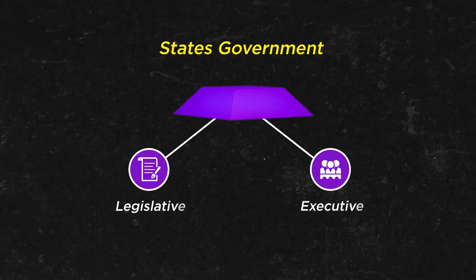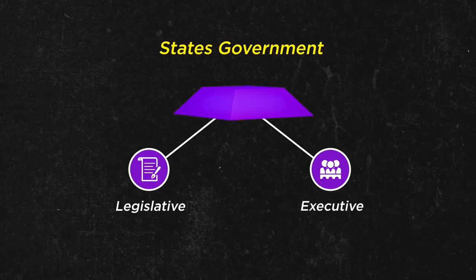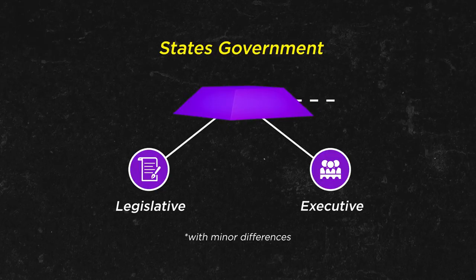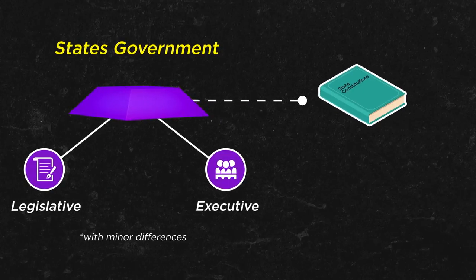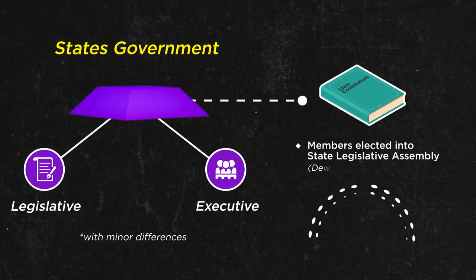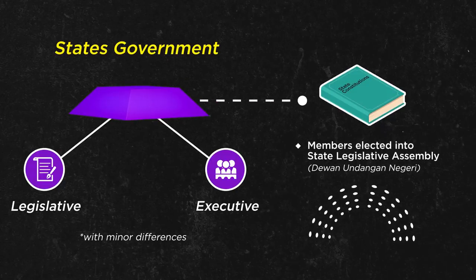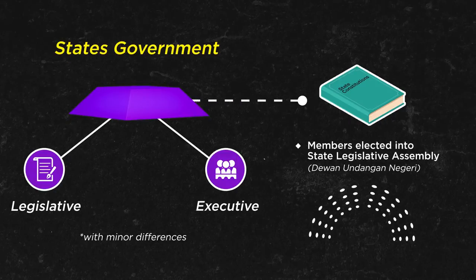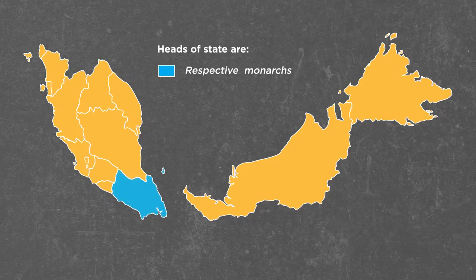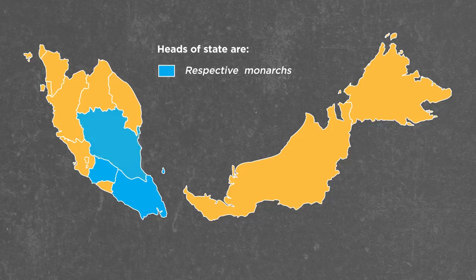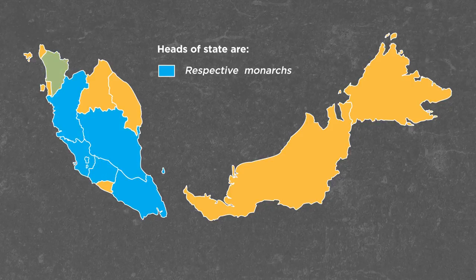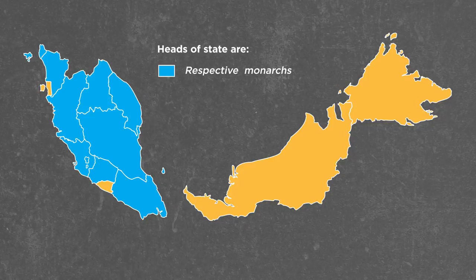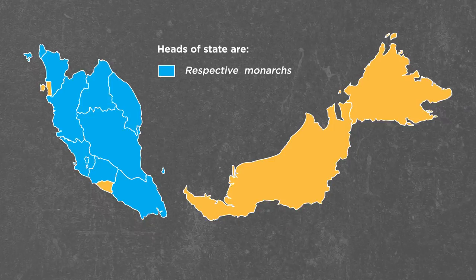Similarly, state governments have their respective executive and legislative bodies, albeit with some minor differences. Each state government is created by its respective state constitution, with members elected into the state legislative assembly, unlike the two-chambered federal legislative system. For the nine states of Johor, Negeri Sembilan, Pahang, Selangor, Perak, Kedah, Terengganu, Kelantan, and Perlis, their heads of state are their respective monarchs.